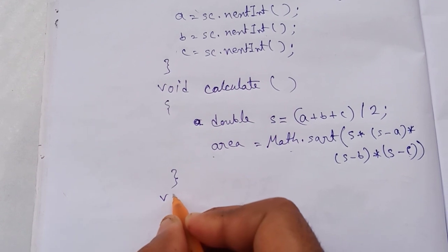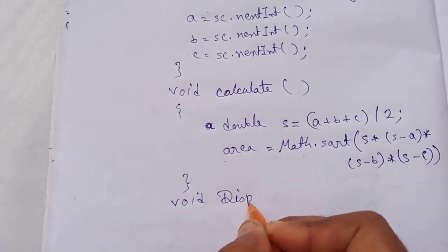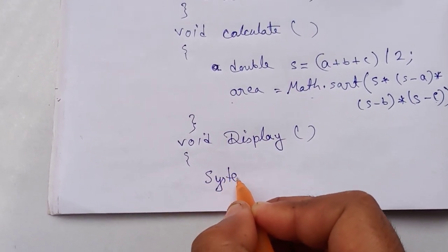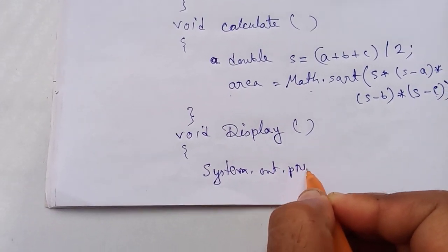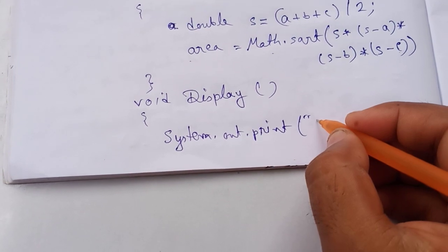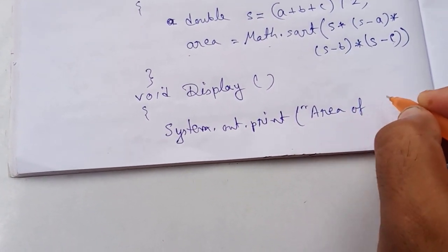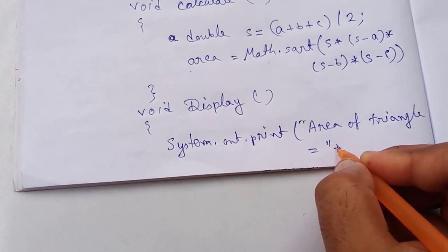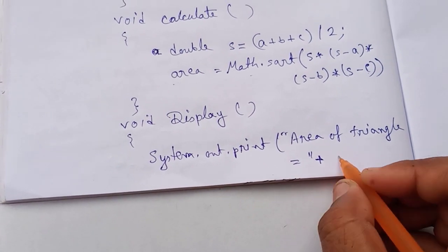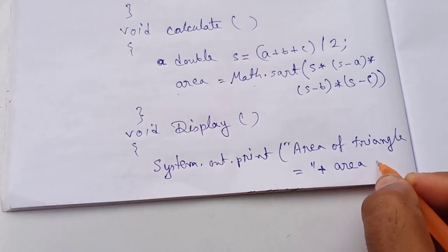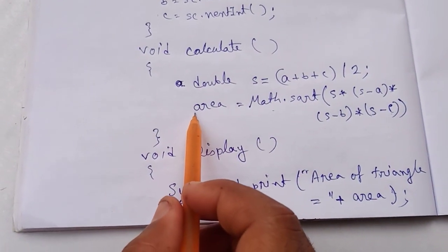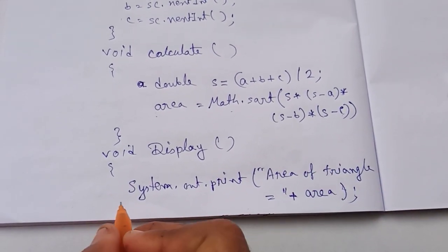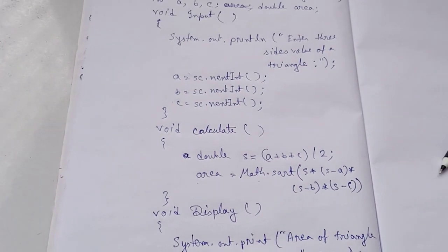Now I am doing the display method: void display(). Inside this method I am just printing the value: System.out.println("Area of triangle is = " + area);. The plus sign is a separator between the message and the variable area, which holds the computed value. Then this method is over. All three methods are now complete.